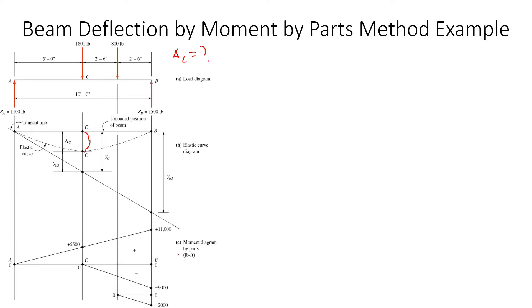Once we draw these, for example if we want to calculate Y_BA, that is the summation of area moment times their x-bars divided by EI. This is the same method as area moment, however this x-bar is a little bit different.